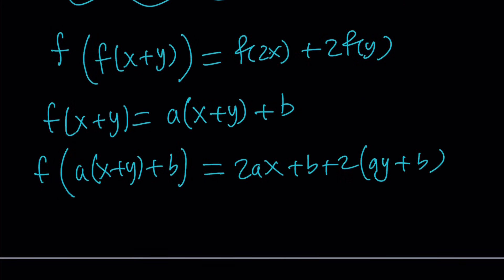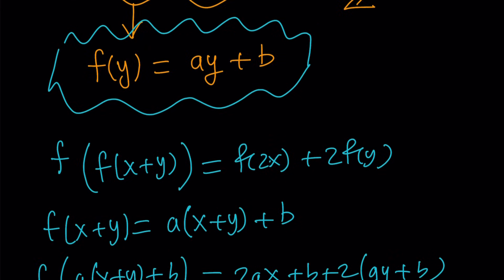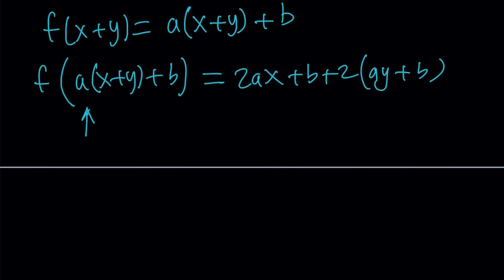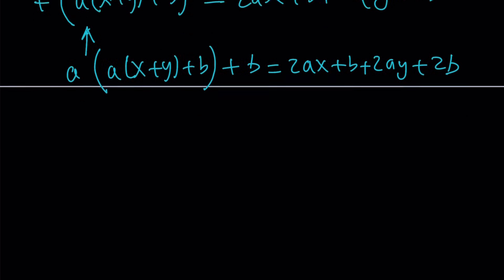And then on the right-hand side, that's going to equal f(2x), which is 2ax + b, and f(y) is ay + b. So we've got an equation like this. And we're going to apply f one more time here. f is just going to take the input, multiply by a, and add b. It's a linear function.